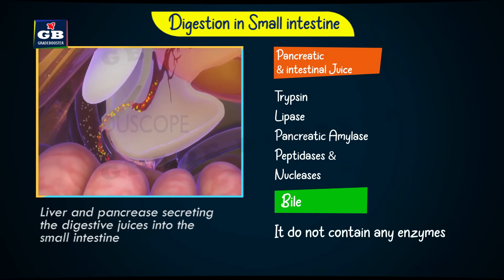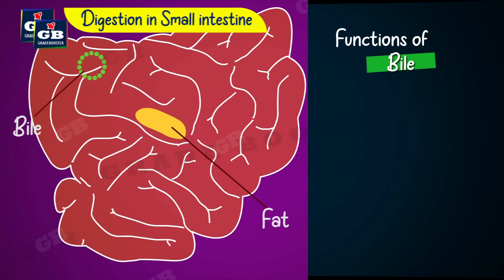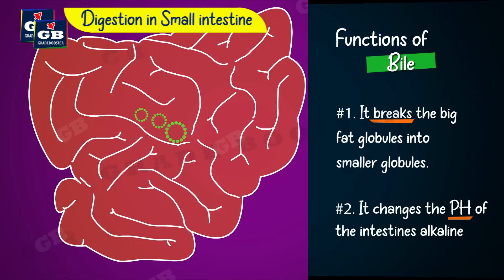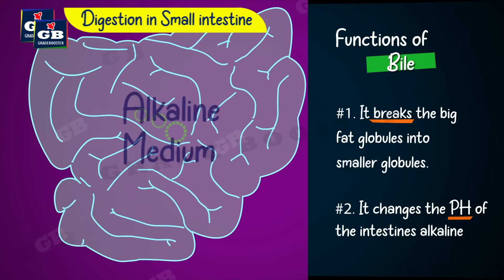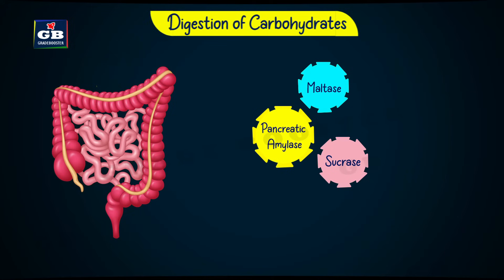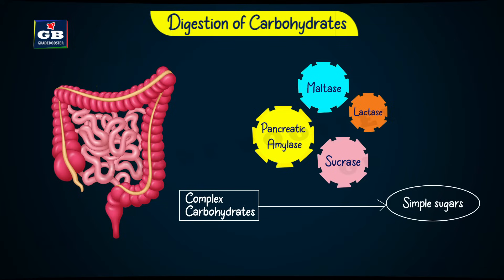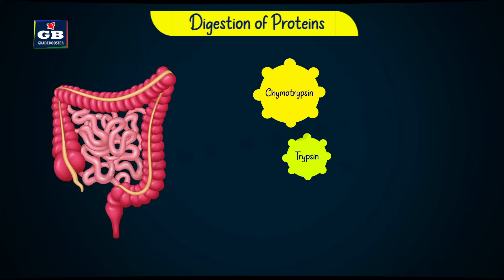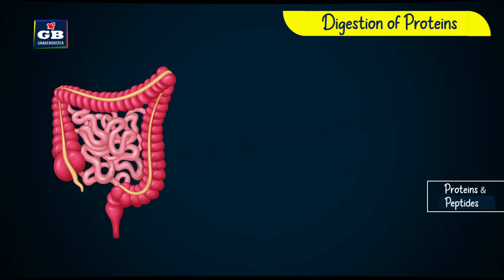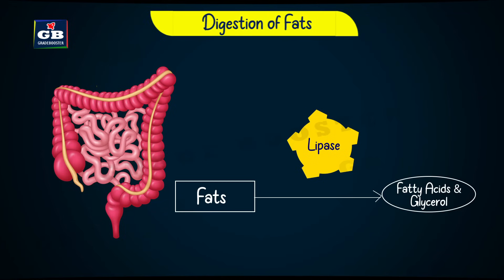Bile does not contain any enzymes, but it does two important things. One, it breaks fat globules into smaller globules so that the action of enzymes on fats becomes easier. Two, it changes the pH of the intestines to alkaline because the digestion of fats and carbohydrates takes place in an alkaline medium. Enzymes like pancreatic amylase, sucrase, maltase, and lactase digest carbohydrates into simple sugars called glucose, galactose, and fructose. Enzymes like trypsin, chymotrypsin, and peptidases convert proteins and peptides into amino acids. Lipase converts fats into fatty acids and glycerol.